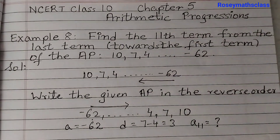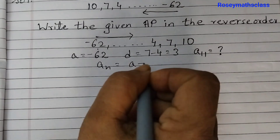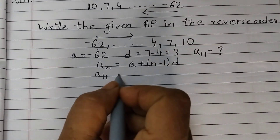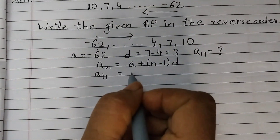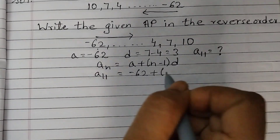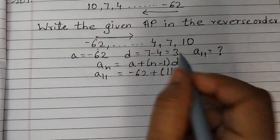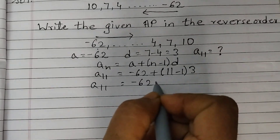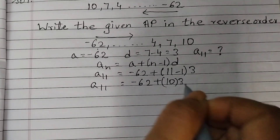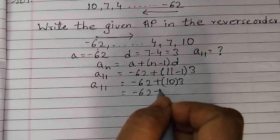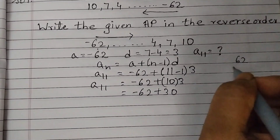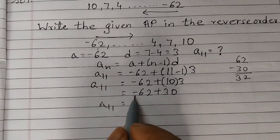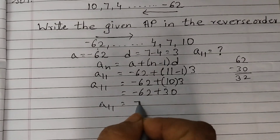The formula we are going to use is: aₙ = a + (n − 1)d. So a₁₁ = minus 62 + (11 − 1) × 3 = minus 62 + 10 × 3 = minus 62 + 30. Because minus is with the bigger number, the result is minus 32.